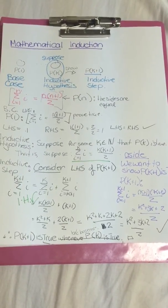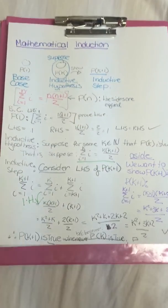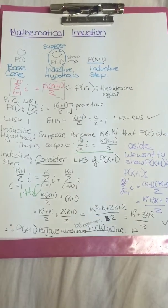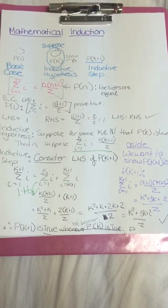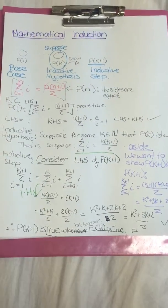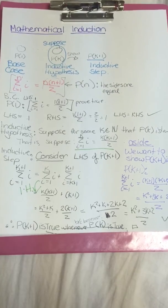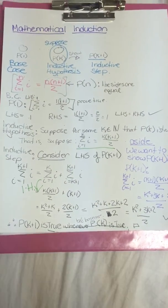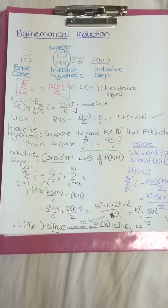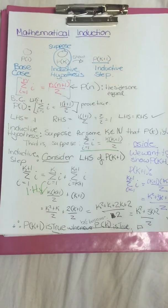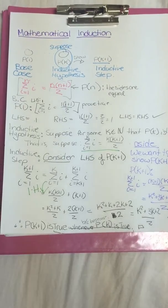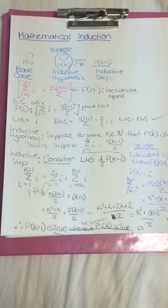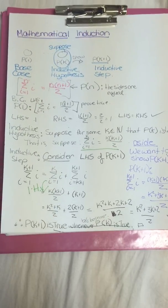Because the base case is true, it's true all the time. So you put a little square because you're done your proof. That's mathematical induction. There are some practice problems below — if you're struggling, put questions in the comments and I can give you full solutions as pictures later on. We'll be back next time for strong induction.